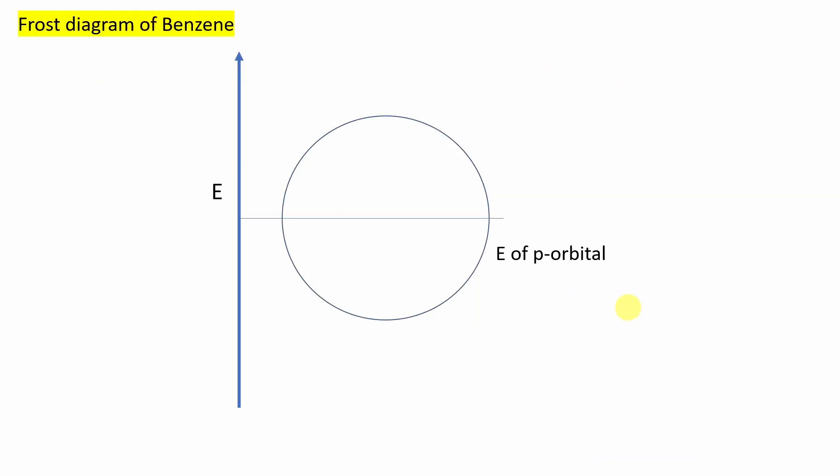What is Frost diagram actually? Or more specifically, Frost diagram of benzene. Actually, aromatic compounds are drawn in this Frost diagram. Now, there is a rule that the tip, you first select and remember what is this? This is the energy of P orbital.